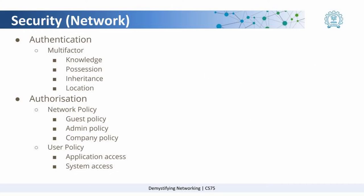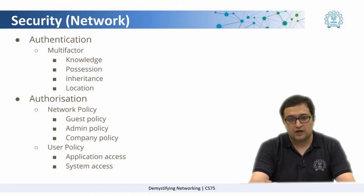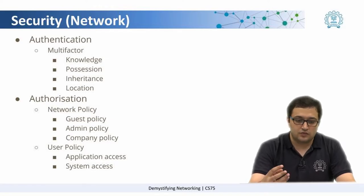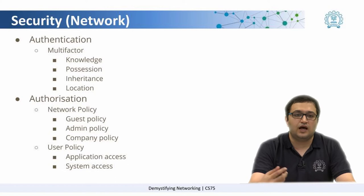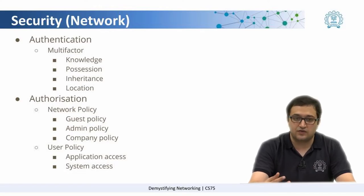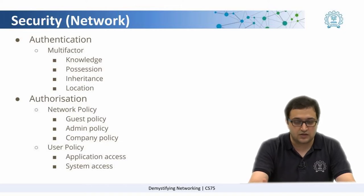By using these three different factors, you could authenticate yourself. Depending on how confidential it is, we could use either one or a multiple of them. These days we also have something called location. For example, if there are certain systems which can only be accessed from a given location, then you can have authentication factors which check where you are right now and only then allow you to enter. For example, if there is a very machine-critical server somewhere and it can only be accessed from the server room, then access can only happen while you are on the machine.